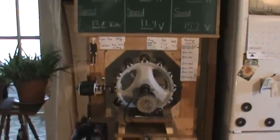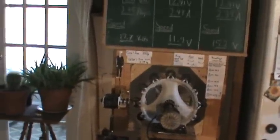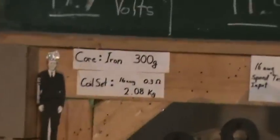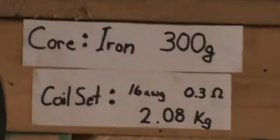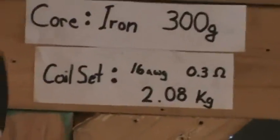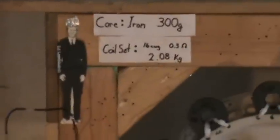Okay, I'm back doing a test on the 16 gauge magnet wire. I'm just going to try and do this quicker. It's the same core, exact same core, 16 gauge magnet wire. The set tests at 0.3 ohms and weighs 2.08 kilograms, so it is one-third heavier than the previous set.